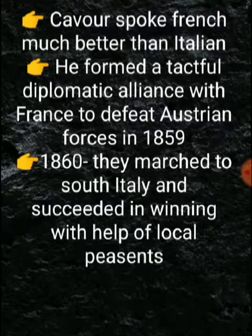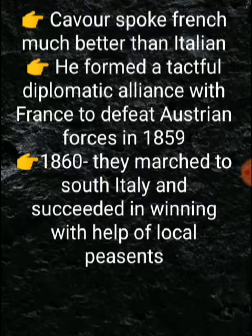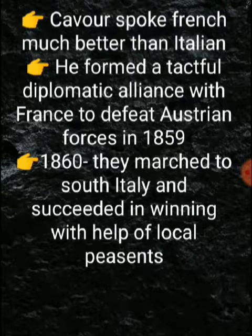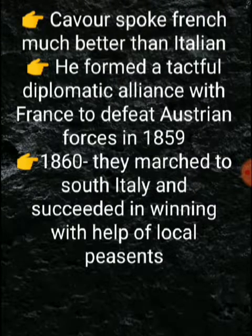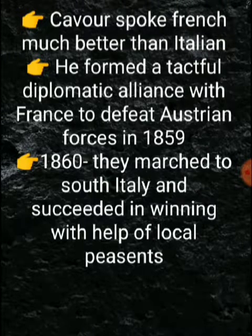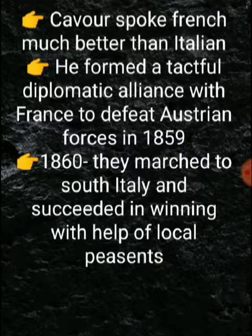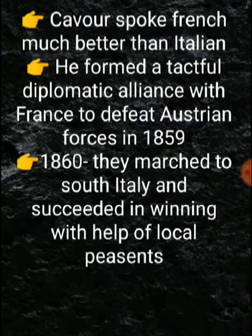Garibaldi went to southern Italy and took on the Kingdom of the Two Sicilies. In 1860, with the support of local peasants, he fought in the war, succeeded, and defeated the Spanish ruler there.